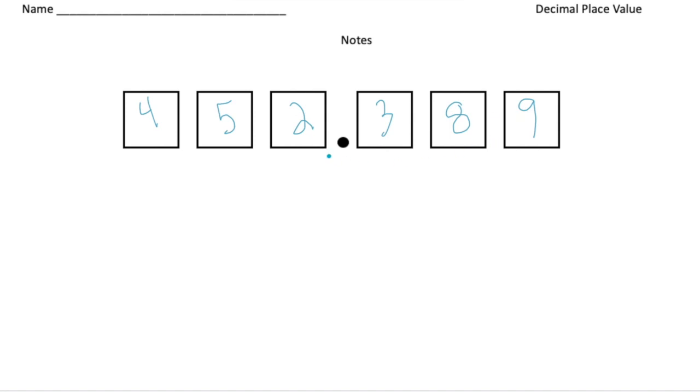All right, now notice how we have the decimal point right in the middle. So to the left of the decimal point, this is the ones value. Let's write ones here. So that means we have two groups of ones.